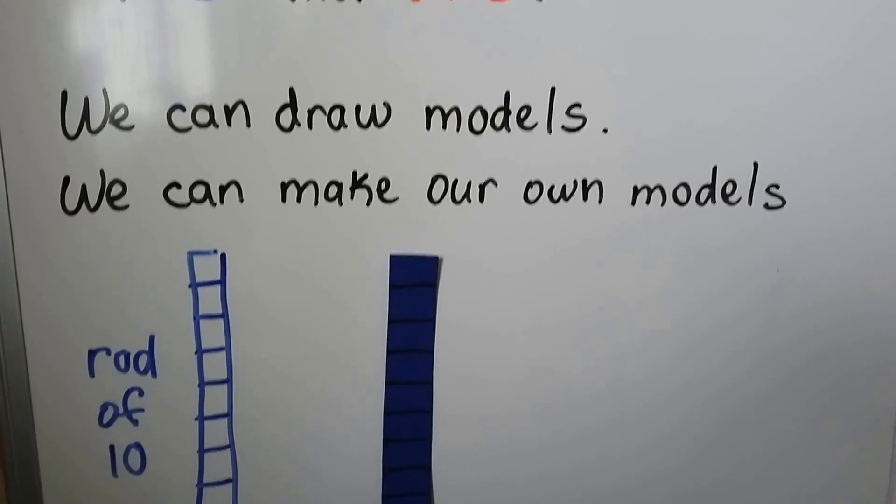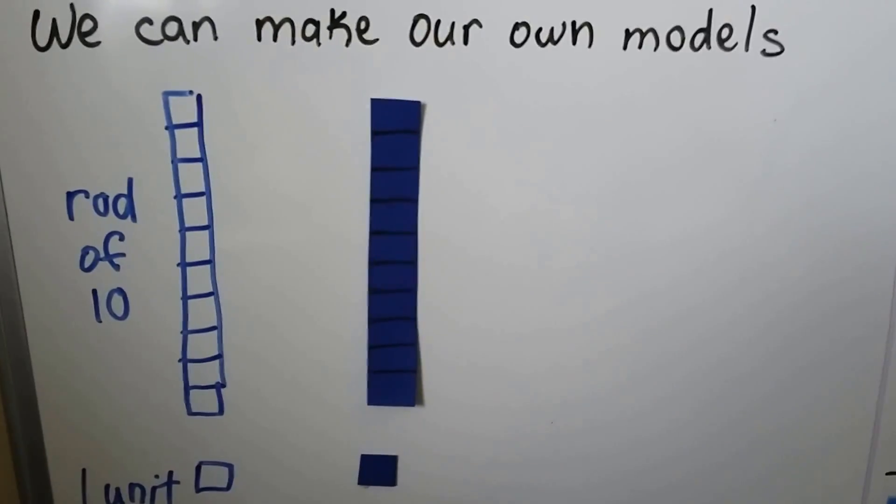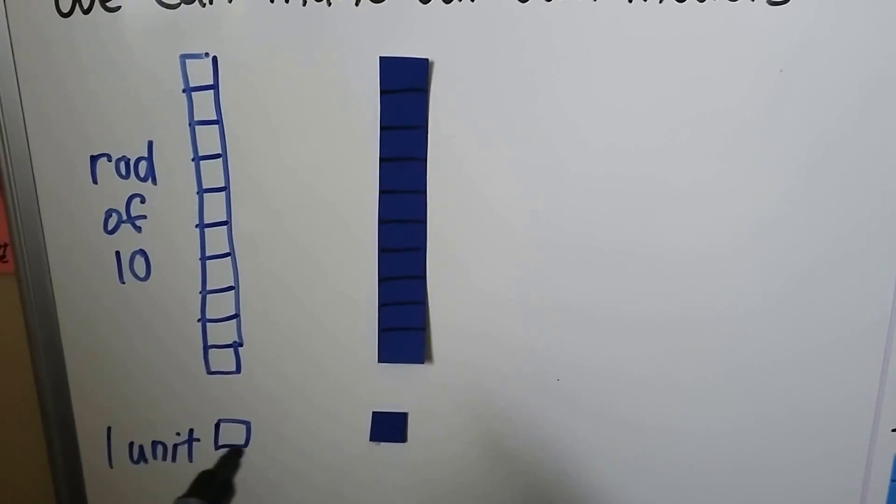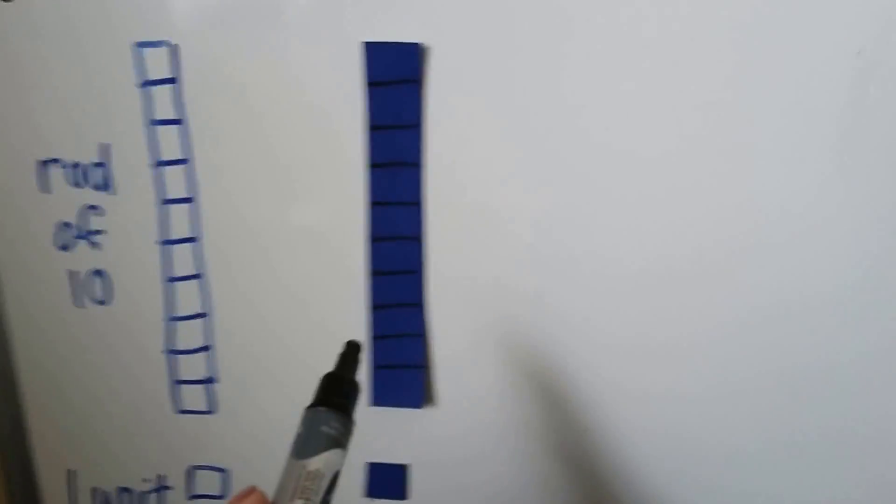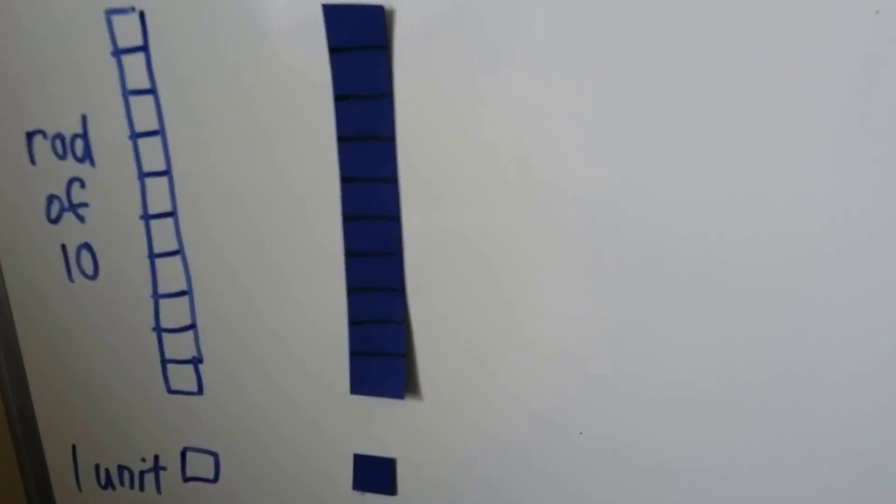We can draw models. We can make our own models. So we can just draw a rod of 10 and little squares for a unit. We can also get construction paper and make a rod of 10 and some little units.